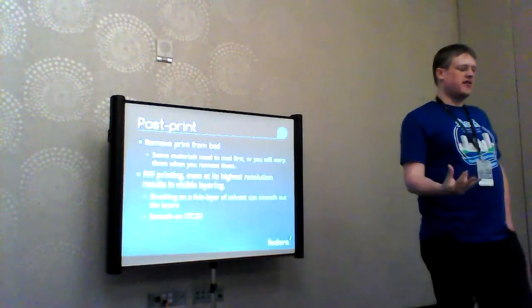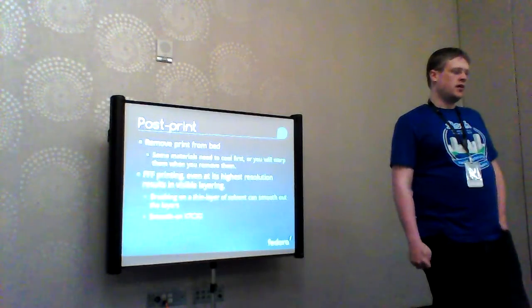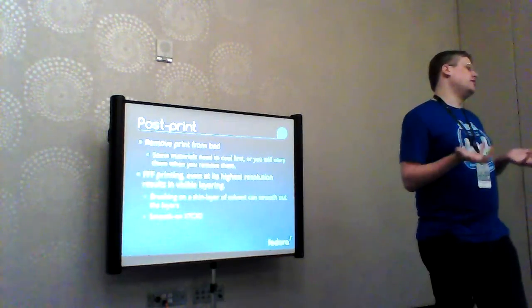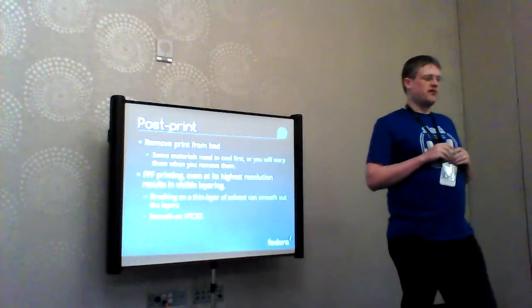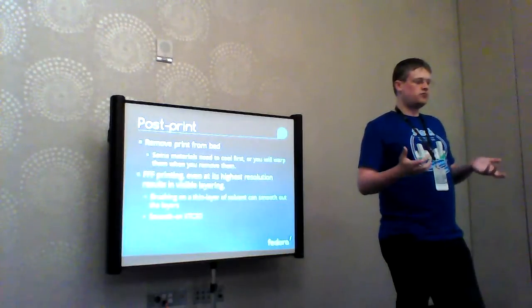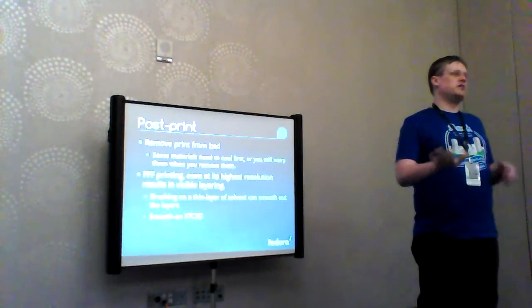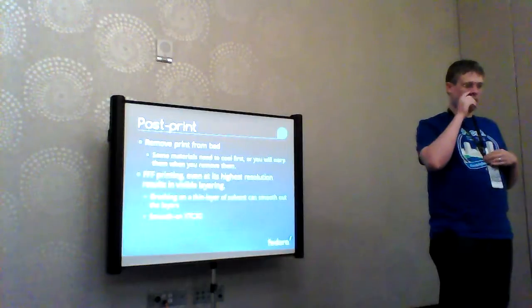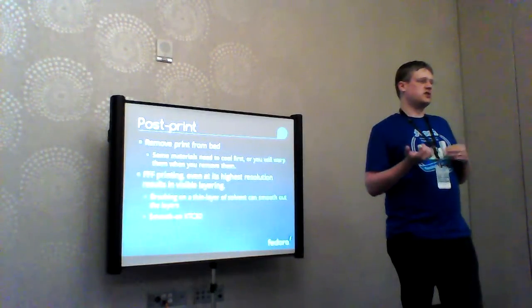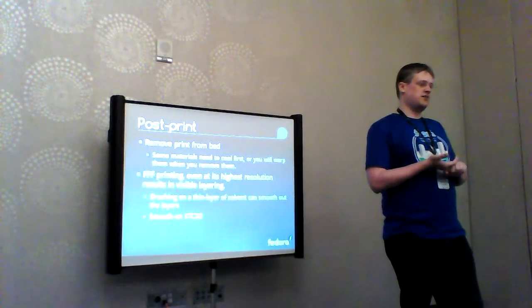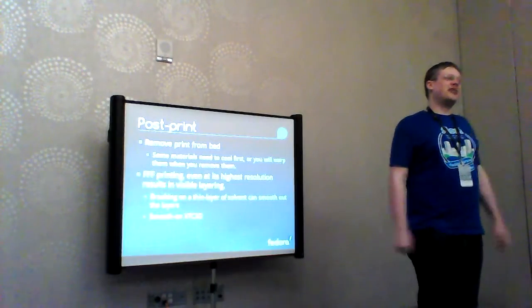All FFF printing, even at the highest resolution, results in visible layering. If that bothers you and you want a smooth look, there are a couple of ways to smooth a model. You can brush on a thin layer of the material's solvent to melt the surface slightly and smooth out the layers. For ABS specifically, the solvent is acetone — nail polish remover — which is cheap and easily accessible at any drugstore. It is slightly flammable though, so don't use it near an open flame.